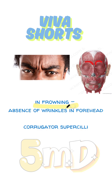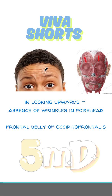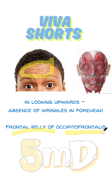In frowning, you can see absence of wrinkles on the affected side — this is due to the small muscle corrugator supercilii. If frowning wrinkles are absent, it is due to facial nerve palsy. Similarly, when looking upwards or raising the eyebrows, if wrinkles are absent on the forehead, it is due to paralysis of the frontal belly of occipitofrontalis, which is also supplied by the facial nerve.